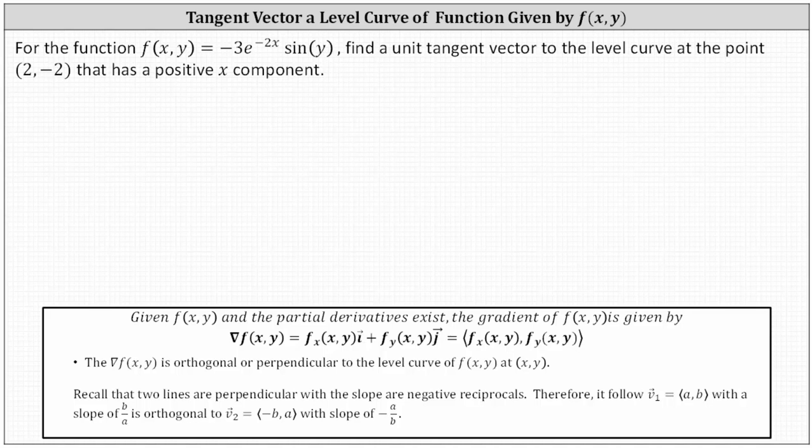To answer this question, we'll use the fact that the gradient vector at the point two comma negative two is orthogonal or perpendicular to the level curve. So if the gradient vector is perpendicular to the level curve, it'll also be perpendicular to the tangent vector at the same point.